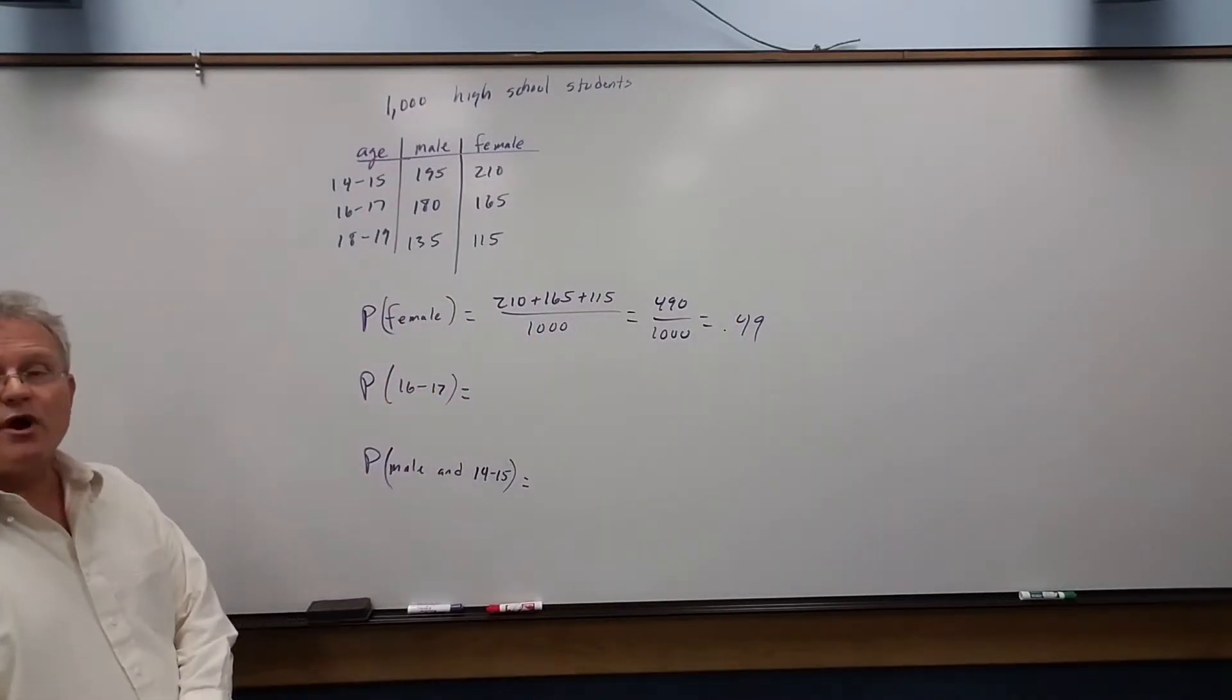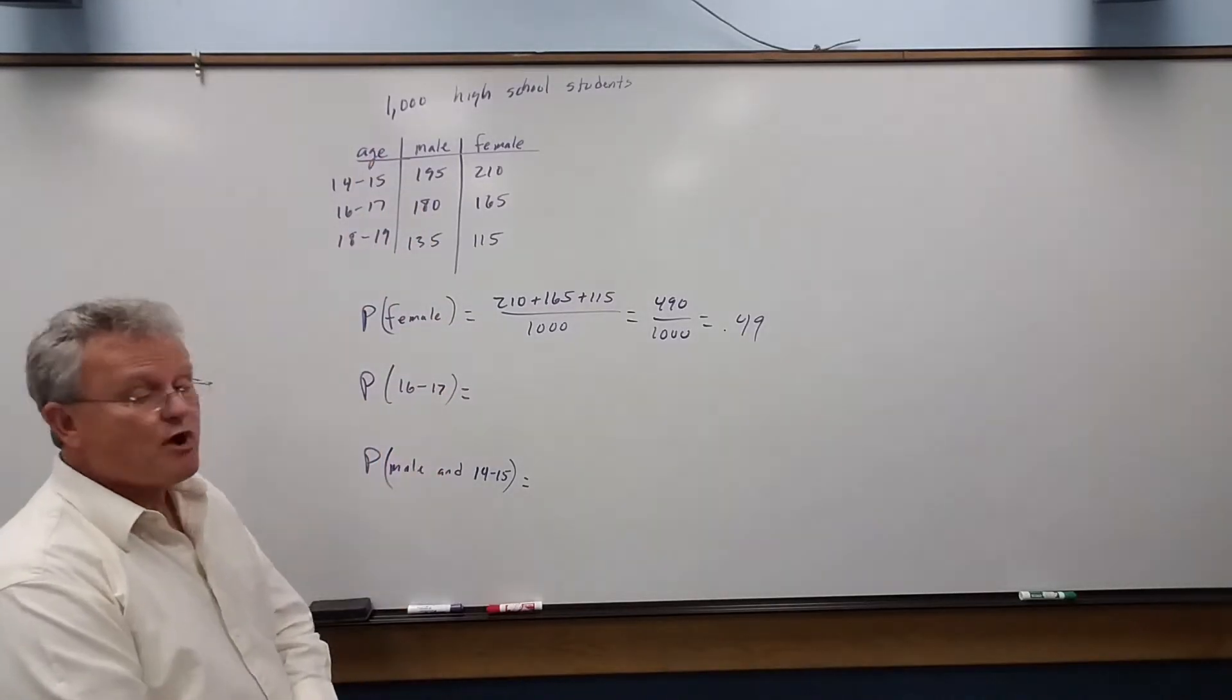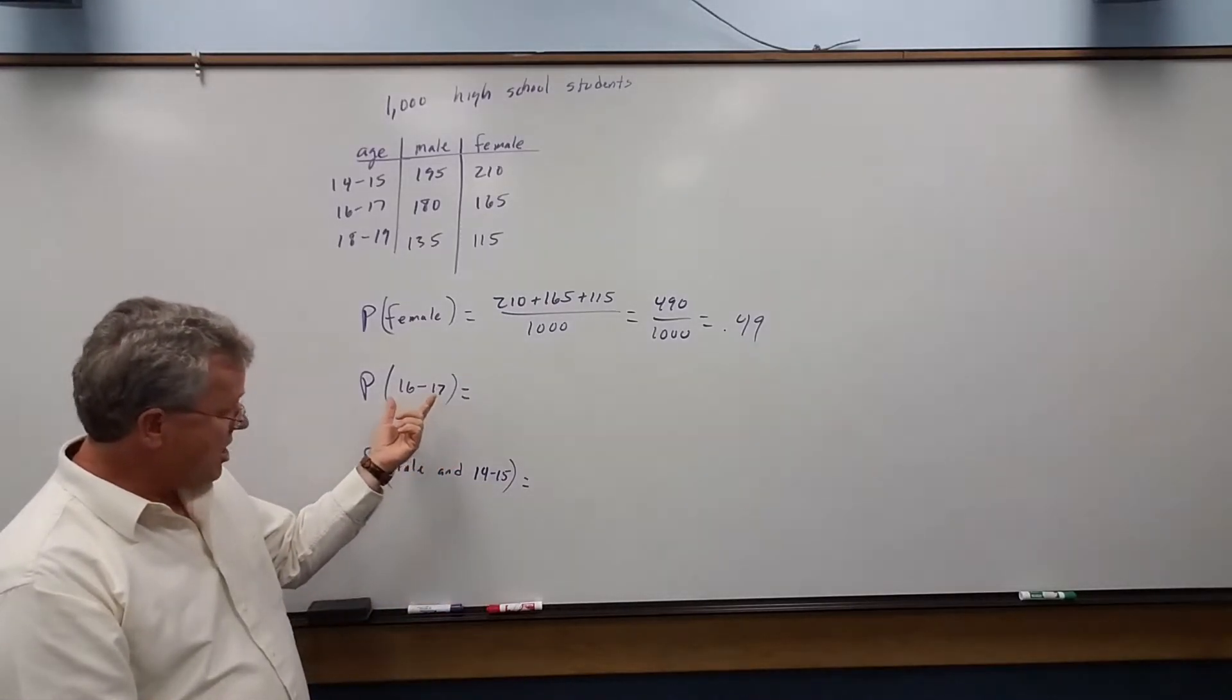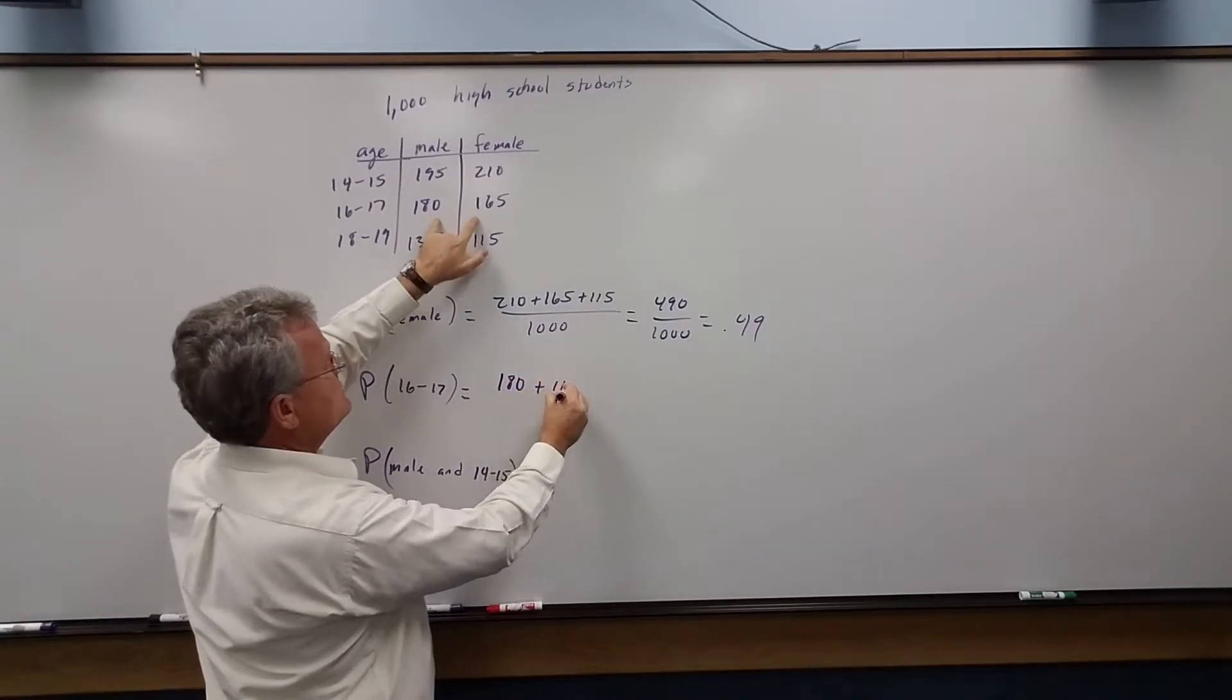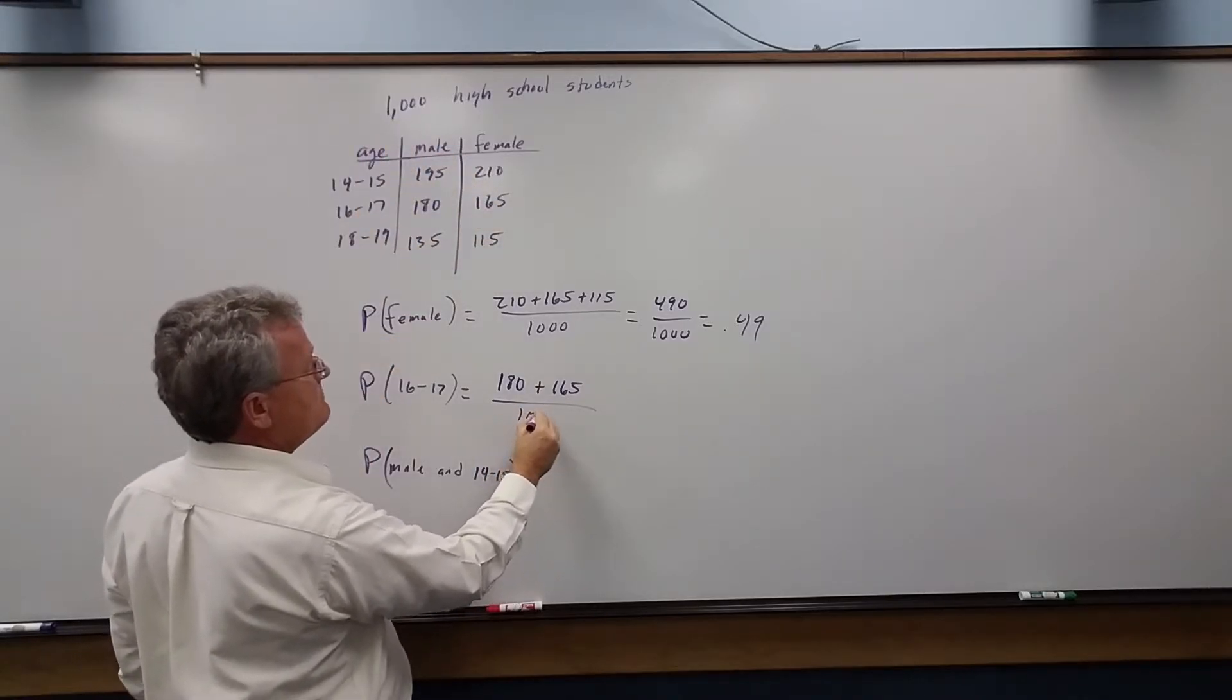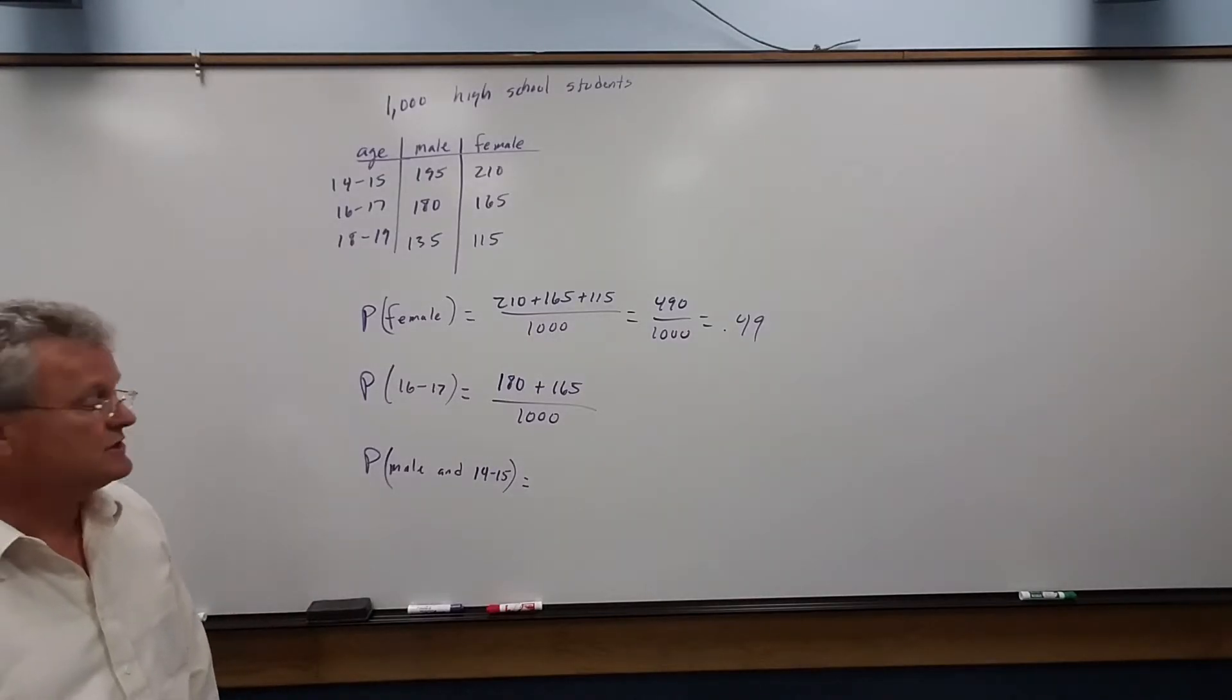All right, so what's the probability if we randomly pick one person that their age is going to be 16 to 17? Well, we've got to count up all the people that are 16 to 17. So this is 180 plus 165 divided by the total number of people, which is 1,000. And then we do the same thing—do the arithmetic and see what you get.